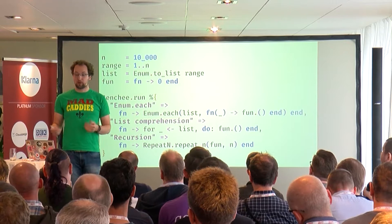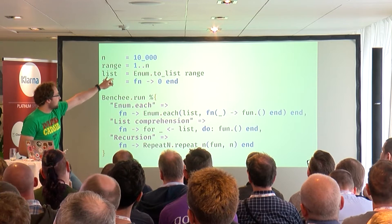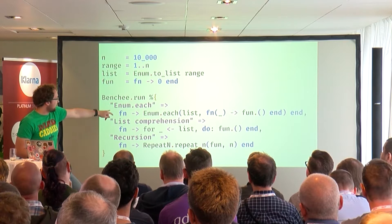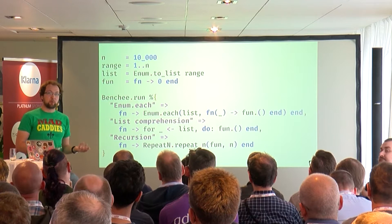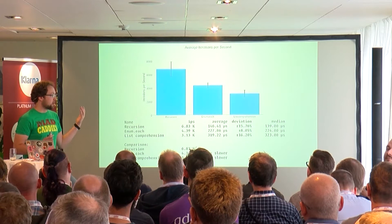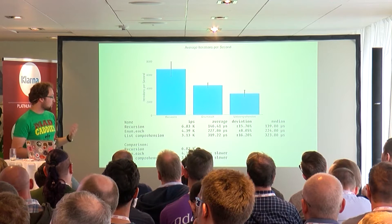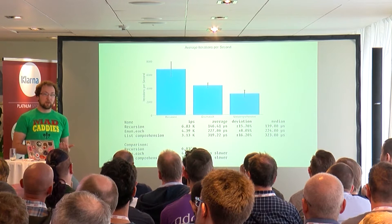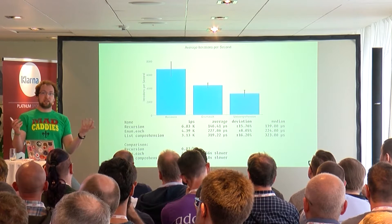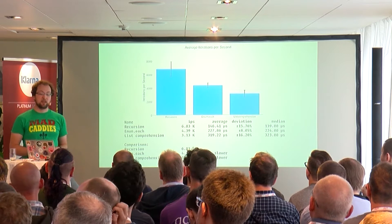Here's a proper benchmark: we define 10,000 elements — 100 is too small — and we define one for enum each, one for list comprehensions, and one for recursion. This benchmark will run for five seconds over and over, and we aggregate all the results. Looking at the results, recursion is actually much faster than the enum each approach — over two times faster than list comprehension, and still a lot faster than enum each. We can't just take random measurements and call it a benchmark; we need statistics to prove what's faster.